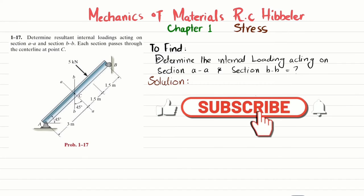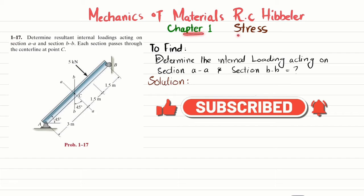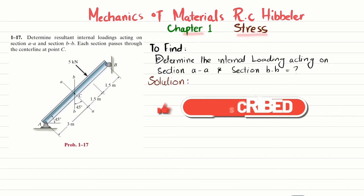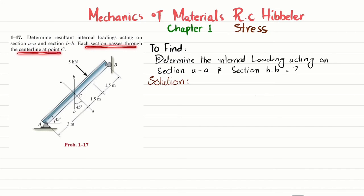Welcome back. In this video we are going to solve problem 1-17 taken from chapter number 1 on stress. The book name is Mechanics of Materials by R.C. Hibbeler. The statement of the problem is to determine the resultant internal loading acting on section AA and section BB, where each section passes through the center line at point C.